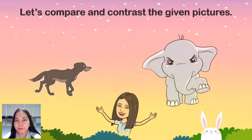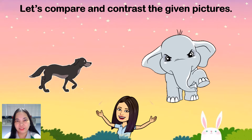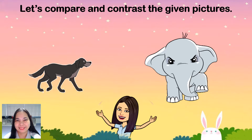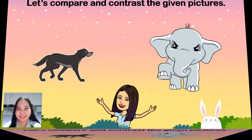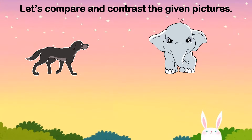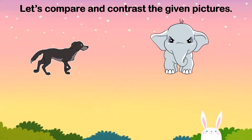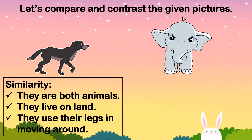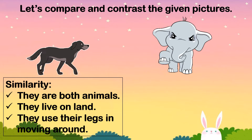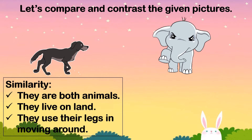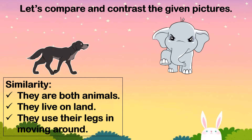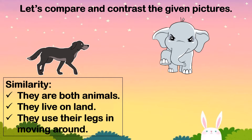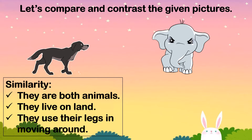Let's compare and contrast the given pictures. Let's compare and contrast the dog and the elephant. These are their similarities: they are both animals, they live on land, and they use their legs in moving around.